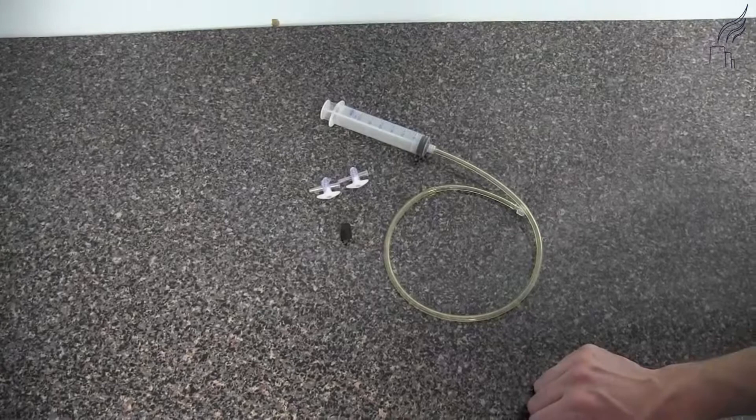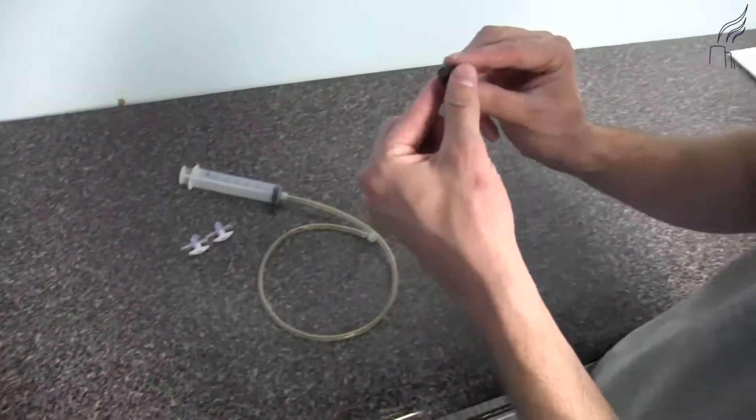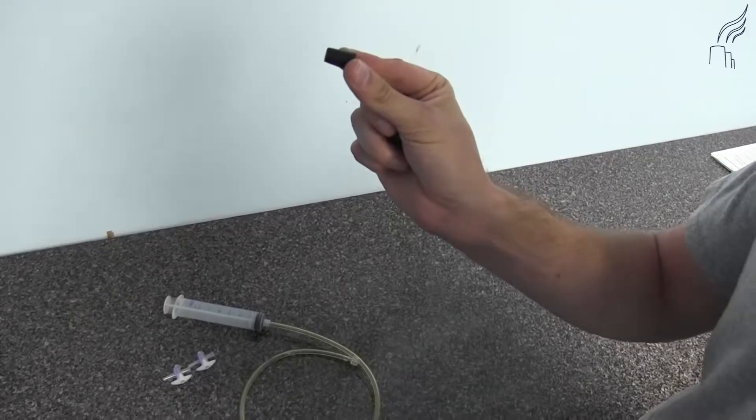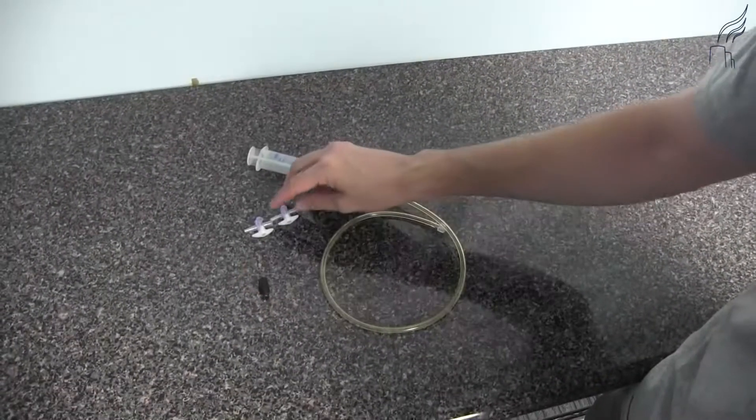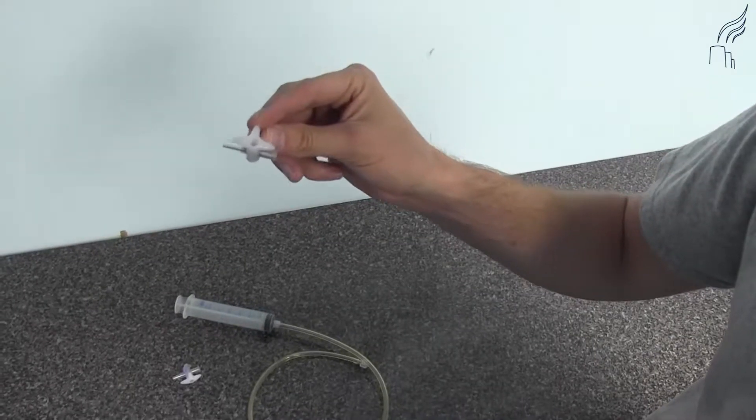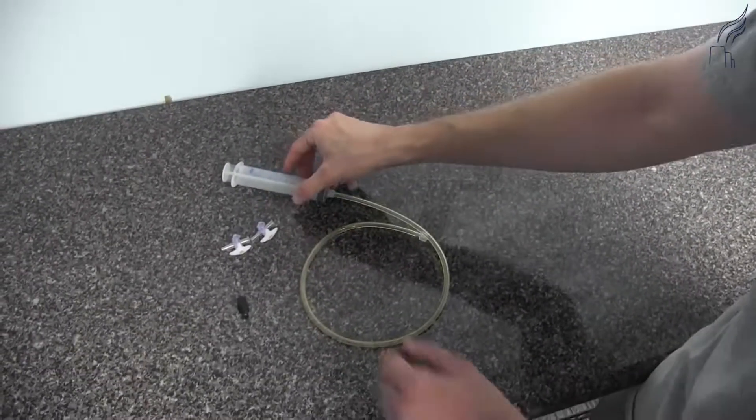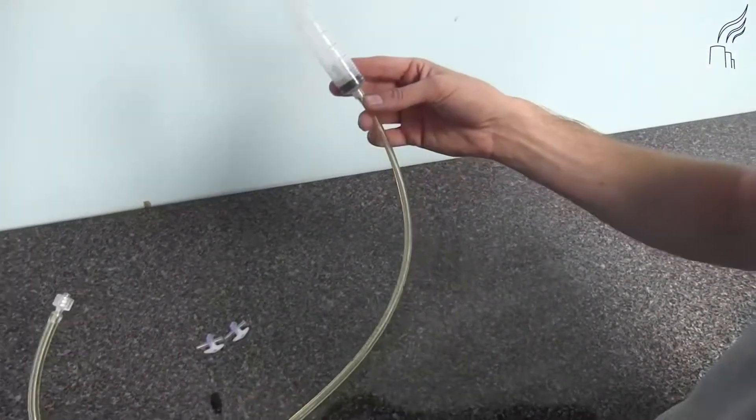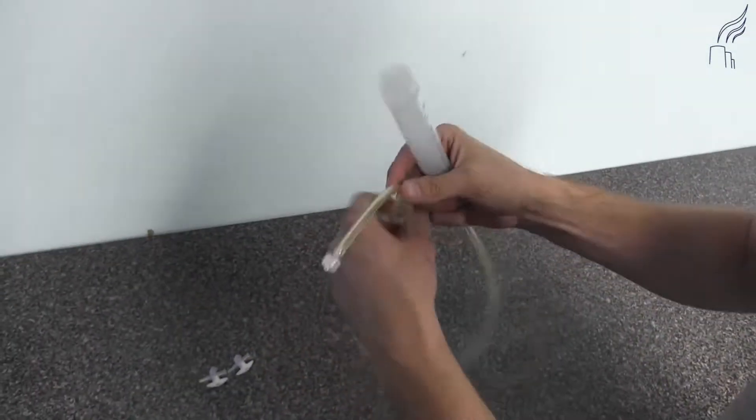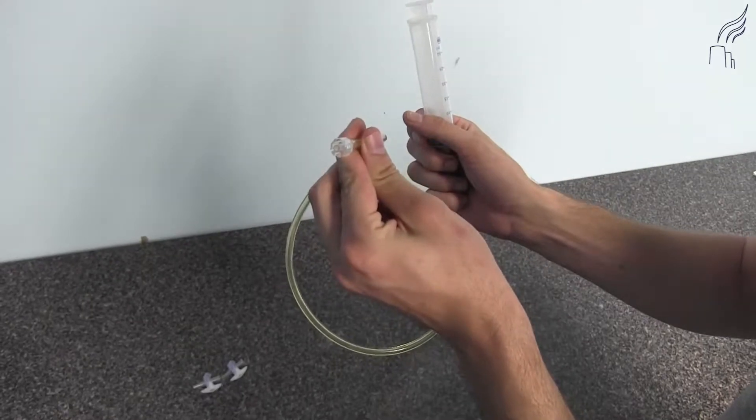You'll need the following items. You'll need a stopper capable of plugging up the DGM outlet. You'll need two Luer Lock T connectors. You'll need a syringe with a Luer Lock connector at the end connected to the tubing.